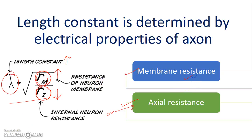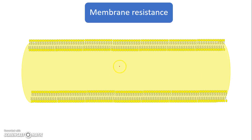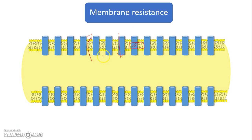Let us see what the terms membrane resistance and axial resistance mean and how we can improve them. The membrane resistance is the resistance offered by the membrane for the movement of ions through it, either from outside to inside or from inside to outside. The membrane has a hydrophobic core which causes a huge resistance in general, but there are ion channels present in the membrane which bring down the resistance — these are the pathways through which ions move inside. Otherwise, the membrane has a very high resistance.